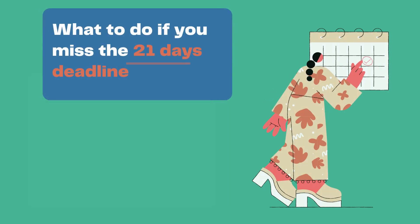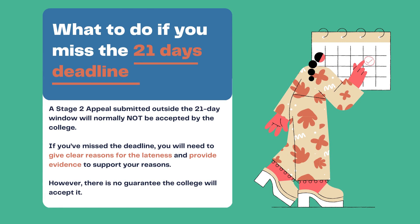A Stage 2 appeal submitted outside the 21-day window will normally not be accepted by the college. If you have missed the deadline, you will need to give clear reasons why you were unable to engage with the appeal procedure within the prescribed time frame and provide evidence to support your reasons. The college will exercise discretion to accept a late appeal, but there is no guarantee.